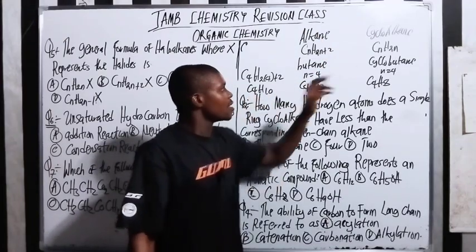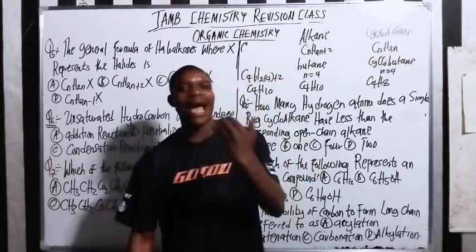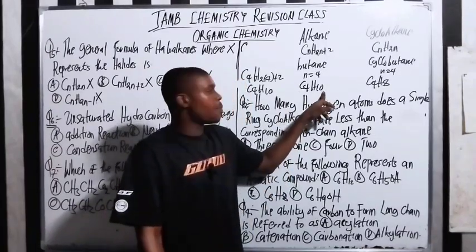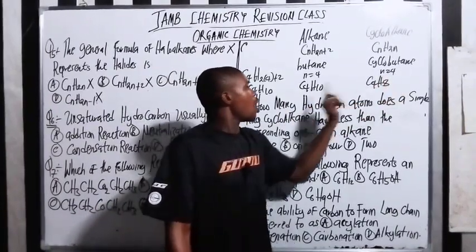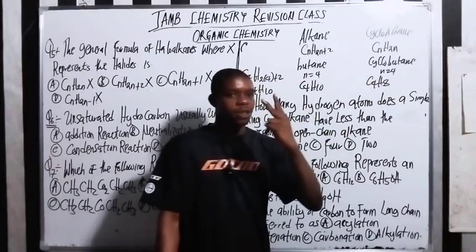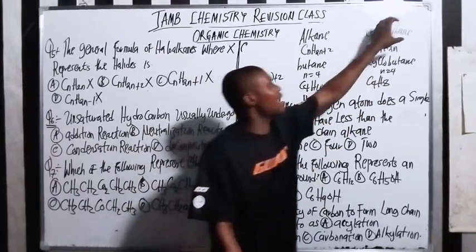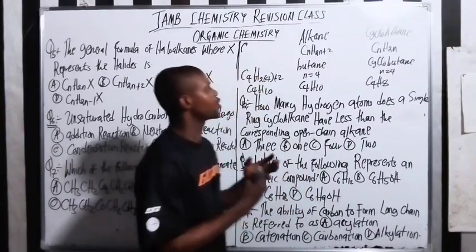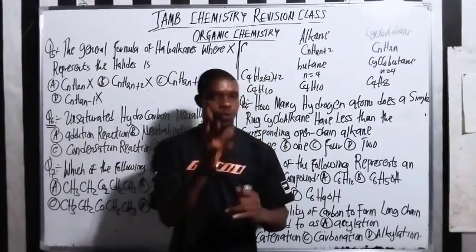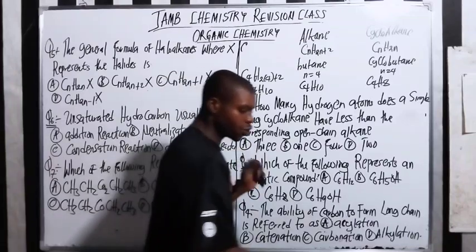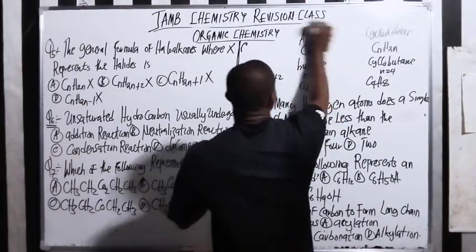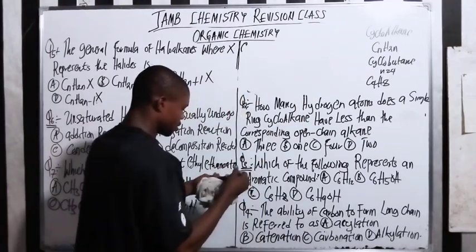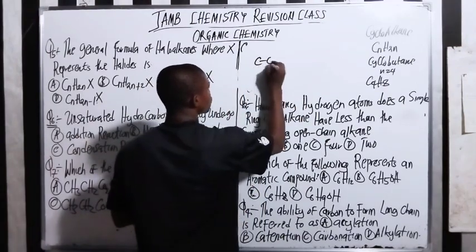Cycloalkanes are always two hydrogen atoms fewer than the corresponding alkanes. Now let me draw the structure for you. If you draw butane — carbon 1, 2, 3, 4 — it's an open chain with 10 hydrogen atoms total, giving C4H10.